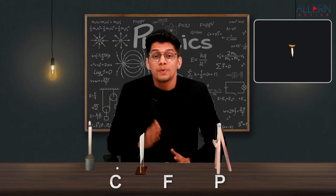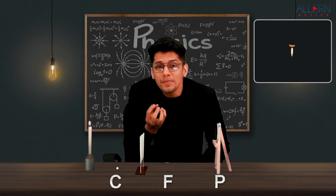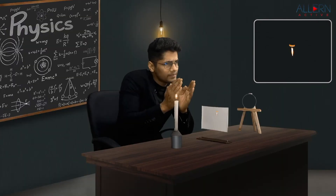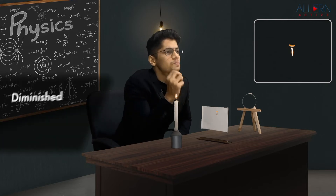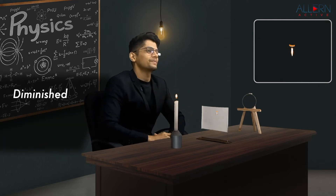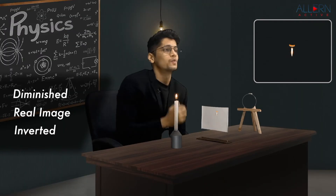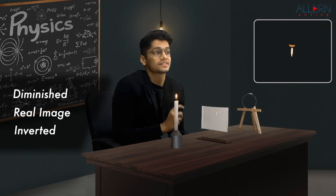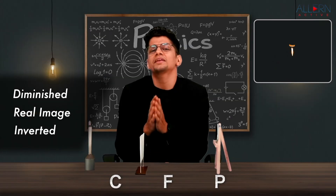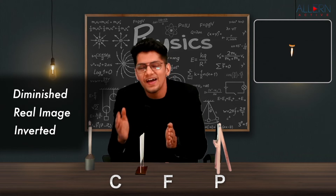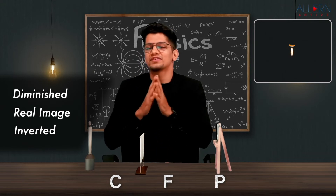As we move the object closer to the mirror, the image moves away from the mirror. The image is slightly bigger than before but still smaller than the actual flame — it is diminished. The image is obtained on the screen, so it is a real image, and all real images are inverted. So with the object beyond C, the image is between F and C — real, inverted, and diminished.